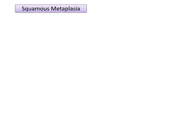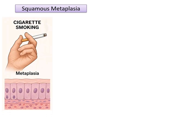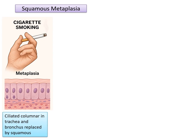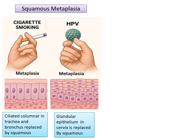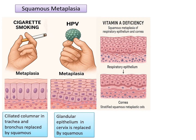In cigarette smoke, toxins damage the pseudostratified ciliated columnar epithelium of the trachea and bronchi. To overcome that stress, the pseudostratified ciliated columnar epithelium is replaced by squamous epithelium. HPV-induced squamous metaplasia in the cervix: the endocervix, lined by columnar epithelium, is replaced by squamous epithelium. In vitamin A deficiency, the pseudostratified columnar epithelium of the respiratory tract and cornea is replaced by squamous epithelium.